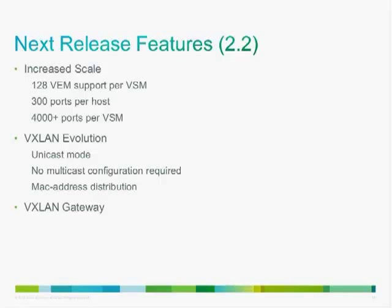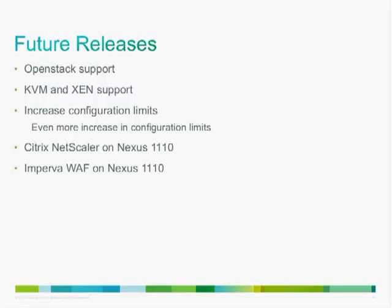Version 2.2 will also introduce a standalone VXLAN gateway running as a VM, able to transition traffic between VXLAN segments and regular VLANs. Beyond 2.2, expect OpenStack support, KVM and Xen support, and further configuration limit increases. Cisco is working to make the Nexus 1000V multi-hypervisor and multi-cloud. You'll also see support for Citrix NetScaler and Imperva WAF applications on the Nexus 1110, eventually tied into the Nexus 1000V with VPath.